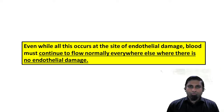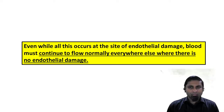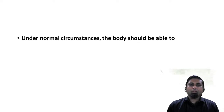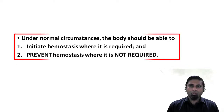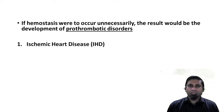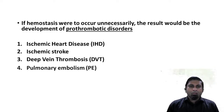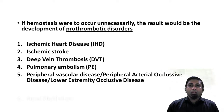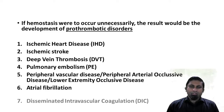It is very important to understand that even while all this occurs at the site of endothelial damage, blood must continue to flow normally everywhere else where there is no endothelial damage. Under normal circumstances the body should be able to initiate hemostasis where it is required and prevent it where it is not. If hemostasis were to occur unnecessarily, the result would be prothrombotic disorders such as ischemic heart disease, ischemic stroke, deep vein thrombosis, pulmonary embolism, peripheral arterial occlusive diseases, atrial fibrillation, and disseminated intravascular coagulation.